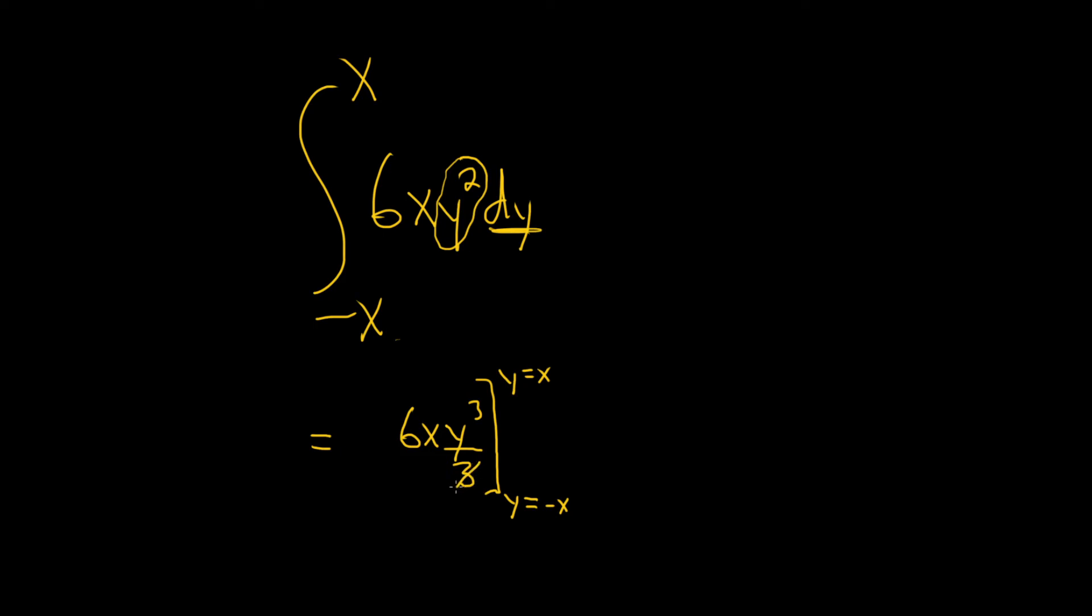Alright, looks like 3 goes into 6 twice. This will be equal to 2xy cubed. And we're going from y equals negative x to y equals x.